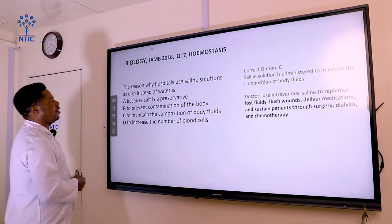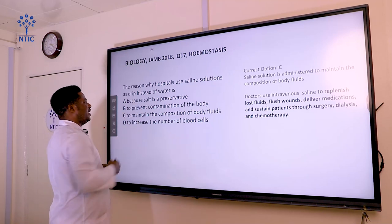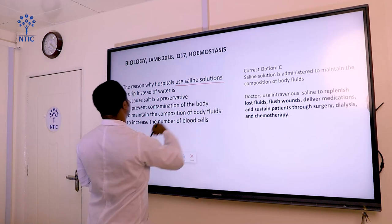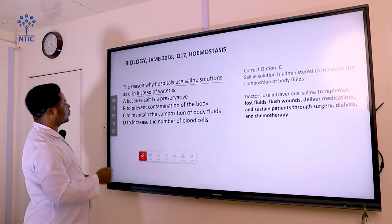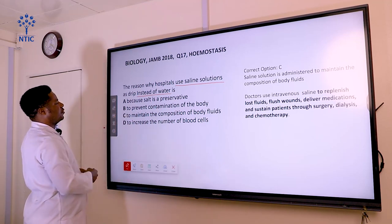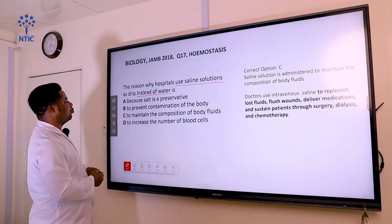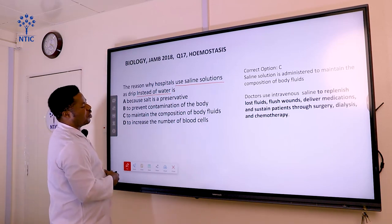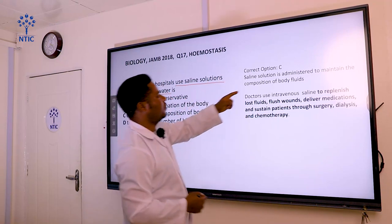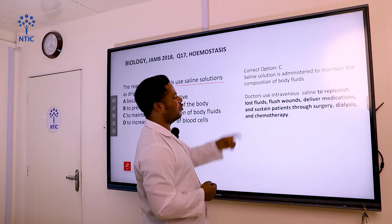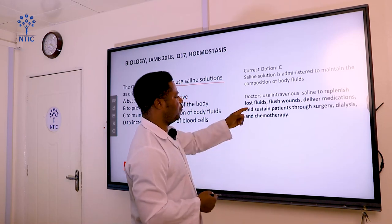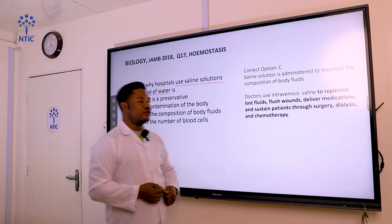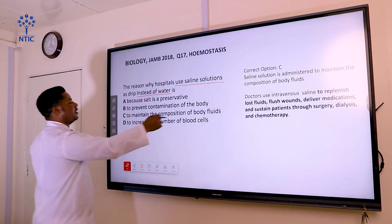Question number seventeen: the reason why hospitals use saline solution as a drip instead of water is... The options are: A — because salt is a preservative; B — to prevent contamination of the body; C — to maintain the composition of the body fluid; D — to increase the number of blood cells. The correct answer is C. Saline solution is administered to maintain the composition of the body fluid. Doctors use intravenous saline to replace lost fluid, flush wounds, deliver medications, and sustain patients through surgery, dialysis, and chemotherapy.